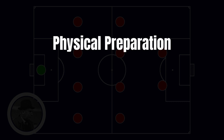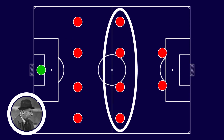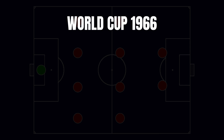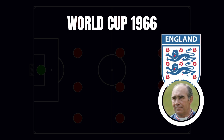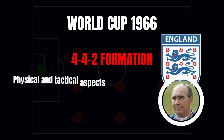A significant enhancer of this advantage was the emphasis on physical preparation, which allowed for more aggressive marking, making the extra players make an even greater difference. In the following World Cup, England, led by Alf Ramsey, lifted the trophy while playing in the 4-4-2 formation, with a style of play where physical and tactical aspects were decisive.